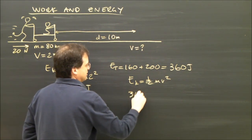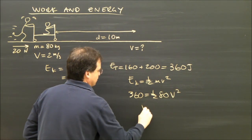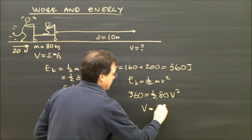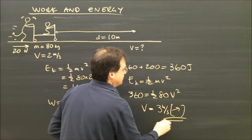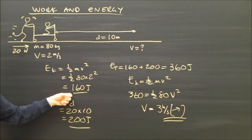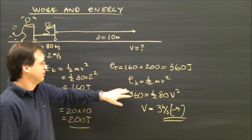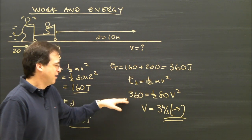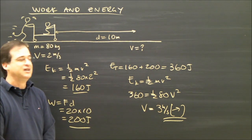So, 360 equals one half 80 v squared, v ends up being 3 meters per second to the right. They were going 2 meters per second, which meant they had 160 joules. They added 200 joules. It gave them a total of 360. That represents the fact that they must be going at 3 meters per second.